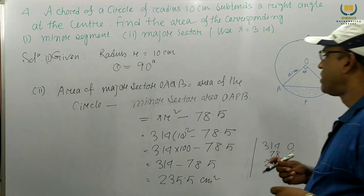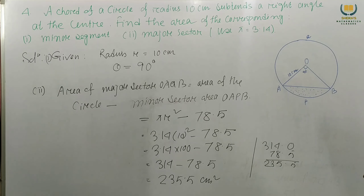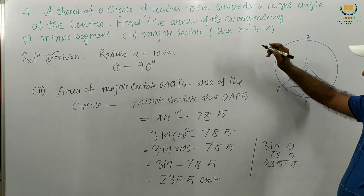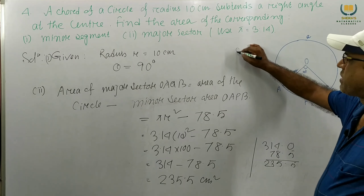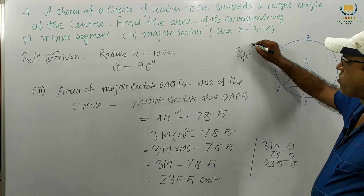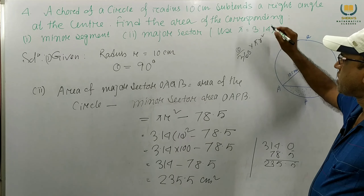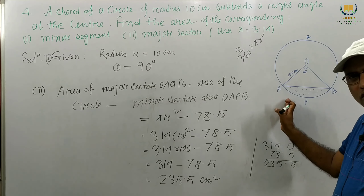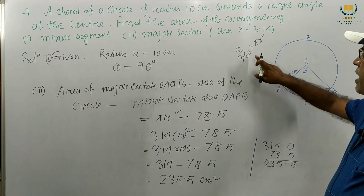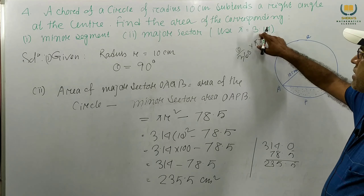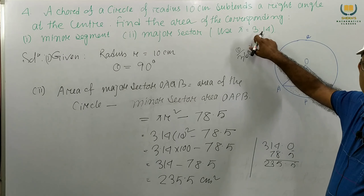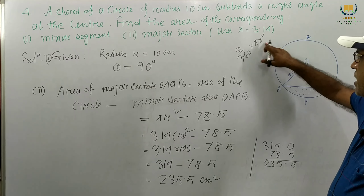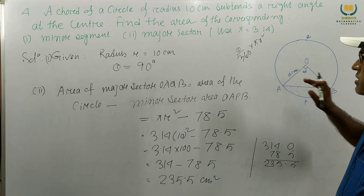Students, this is a very simple problem. For finding this type of problem, you have to know the formula. Sector area means theta by 360 into pi R square. Theta will be given in your problem. Pi here is given as 3.14; if not given, then consider 22 by 7. R will also be given in the question.